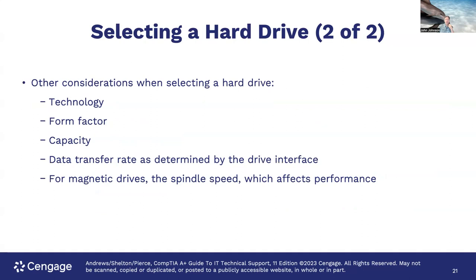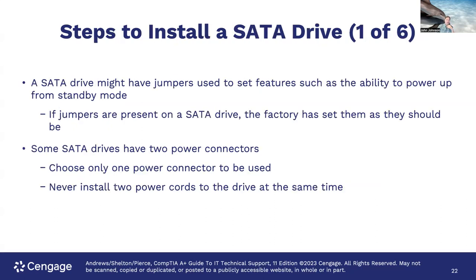Other considerations when selecting a hard drive: technology, form factor, capacity, and data transfer rate determined by the drive interface. For magnetic drives, the spindle speed affects performance — you'll see ratings like 7200 RPM and 5400 RPM. A SATA drive might have jumpers used to set features such as the ability to power up from standby mode. If jumpers are present on a SATA drive, the factory has set them as they should be — don't tamper with them.